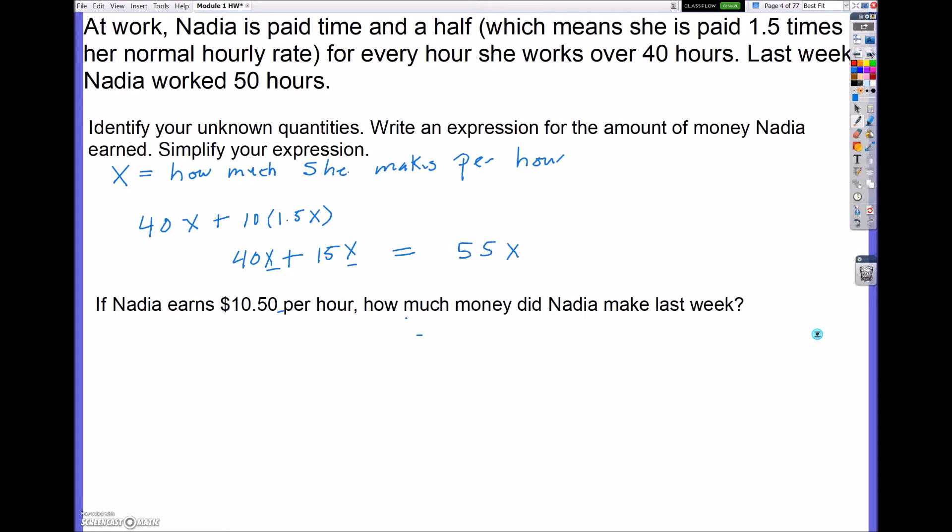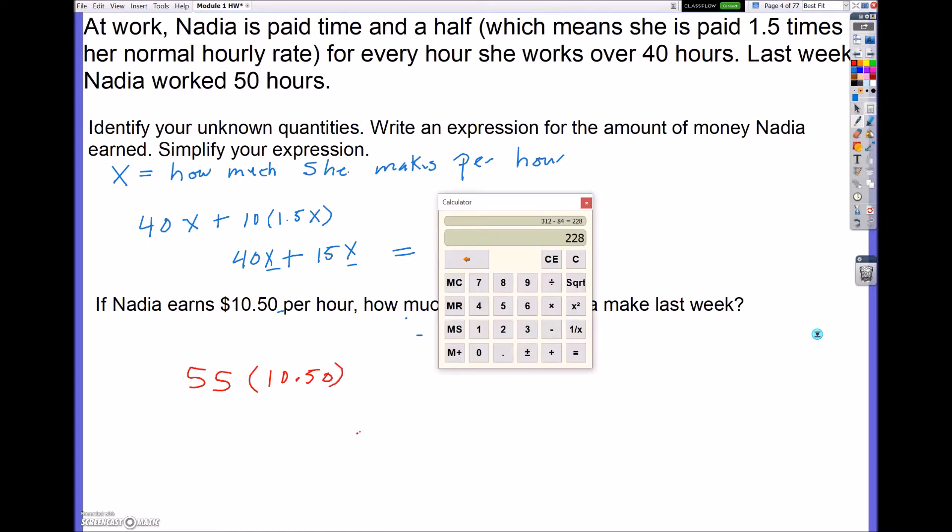Now the next part it says, well, let's say she makes $10 an hour, or excuse me, $10.50 an hour. We'll just do 55 times 10.5, because that's how much she makes per hour, and we're just going to multiply those two. So we're going to do 55 times 10.5, which will give us $577.50. That's how much she makes per hour.